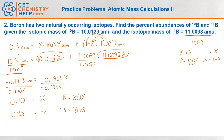Does this answer seem reasonable? Well, 20% of it weighs about 10 and 80% of it weighs about 11. So the answer should be about 80% of the way between 10 AMUs and 11 AMUs. And we saw the average was 10.8, which is almost exactly 80% of the way between 10 and 11. So this answer does indeed seem reasonable.